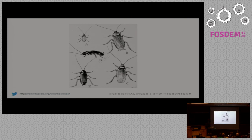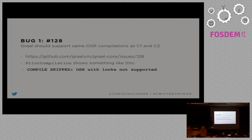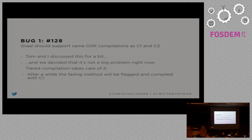We ran Graal at Twitter and found a few bugs — actually only two real ones, though I'm talking about three here. The first thing we noticed: Graal does not support certain on-stack replacement compilations, which could be an issue. When you turn on print compilation, it says it can't do an OSR with locks.